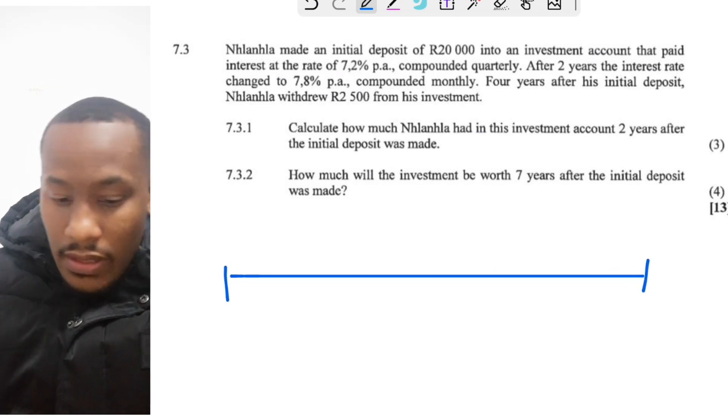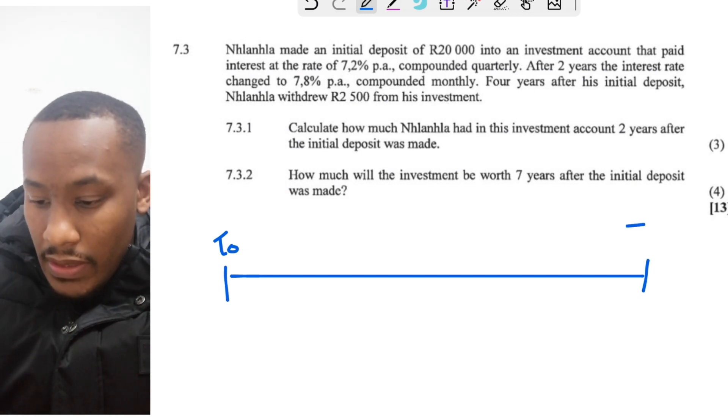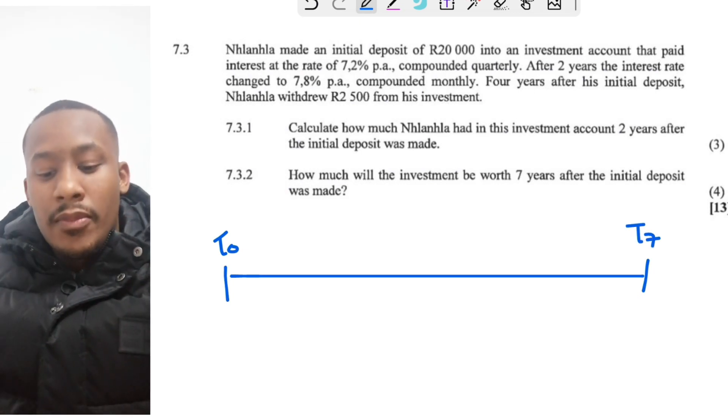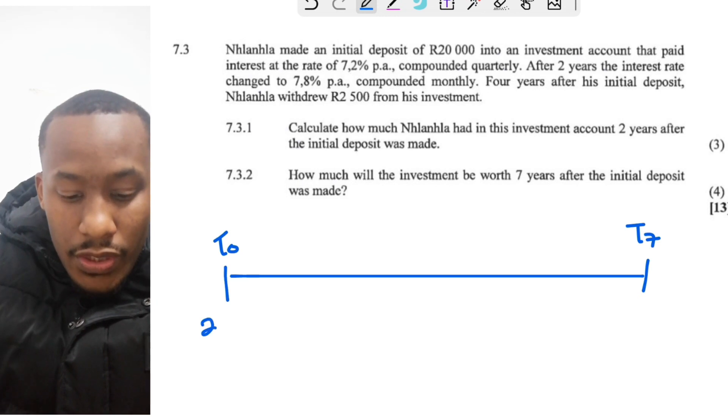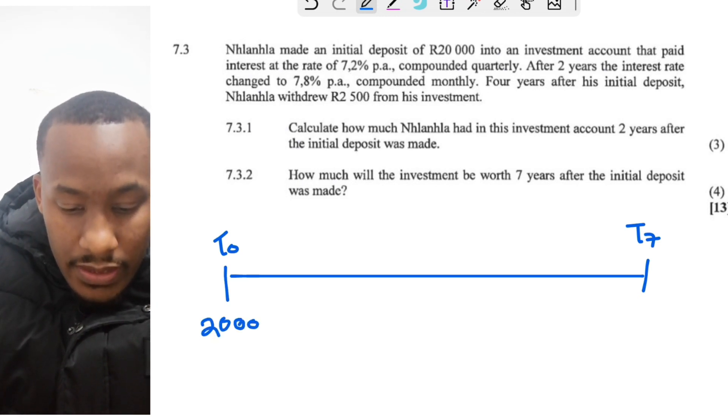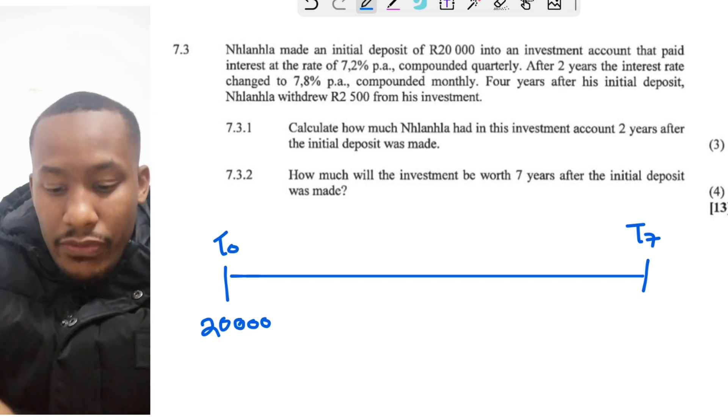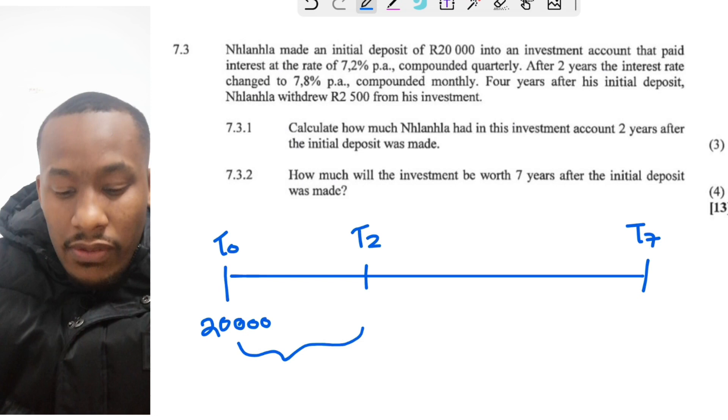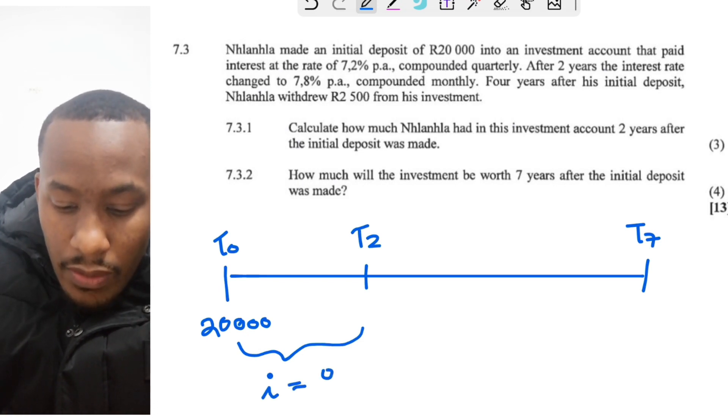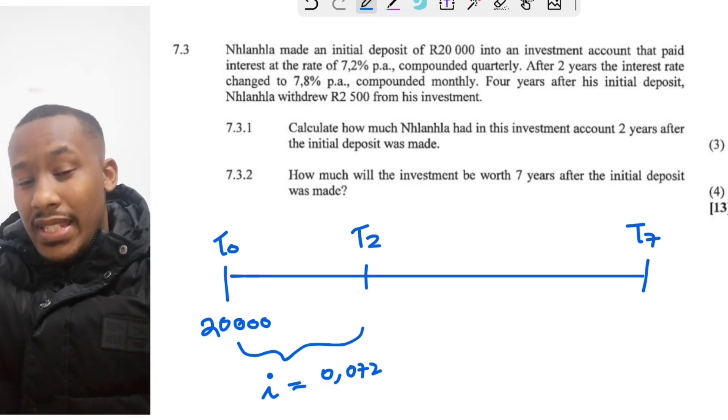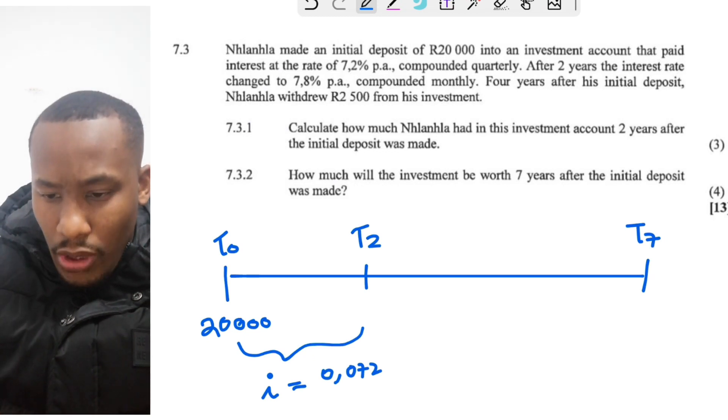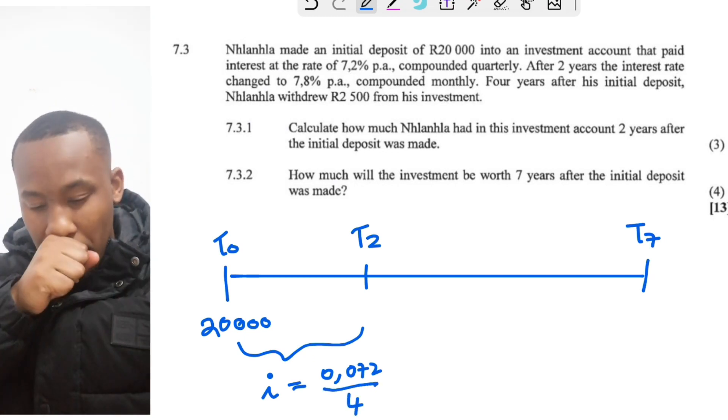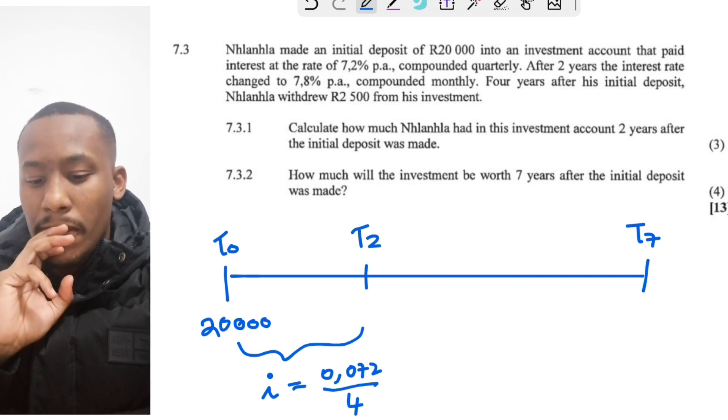This is usually not a must, but it sort of helps. So the initial deposit was 20,000 Rand, and for the first two years it generated an interest rate of 0.072, that is 7.2% per annum compounded quarterly. So I'm going to divide that by four. That was the interest rate.